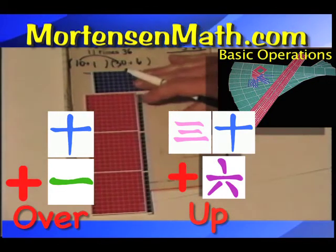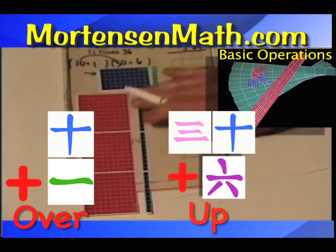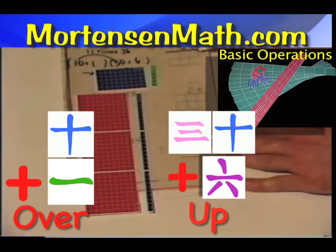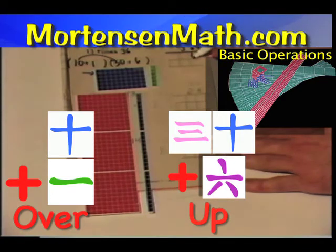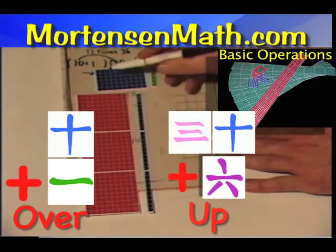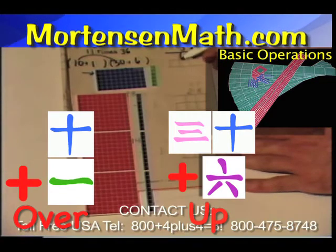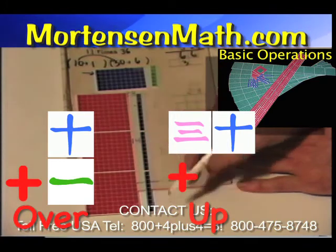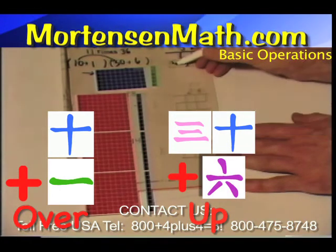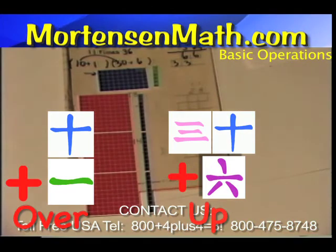Now I can write down the amounts. Six, six units, six bars of ten, three bars of ten, three square hundredths.